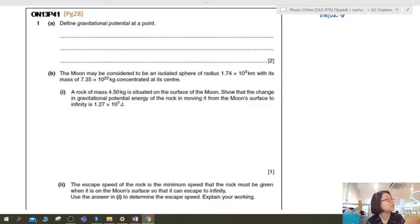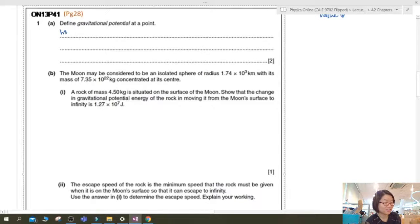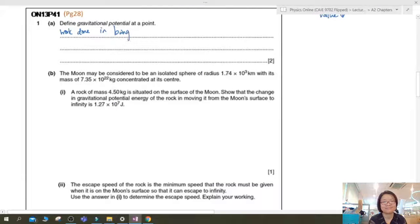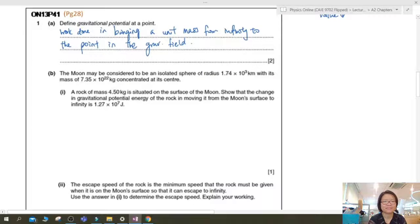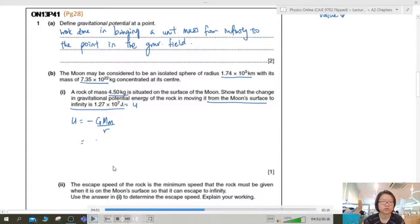So the next question we'll talk about is from ON13, paper 4-1. Define gravitational potential, children, my children. Gravitational potential should be at your fingertips by this point. So work done per unit mass in bringing it from infinity to a point in the gravitational field. So sometimes I write the sentence differently for variety. Okay, so part B. The moon may be considered an isolated sphere. And then you got these values of radius and mass. So right now, you are asked to find, or to show that the change in gravitational potential energy of the rock moving from the moon surface to infinity is this one. So you are asked to prove this.